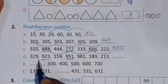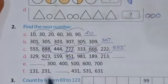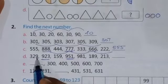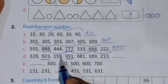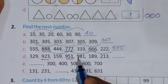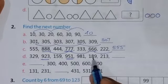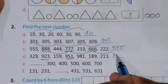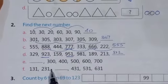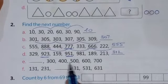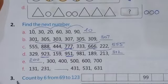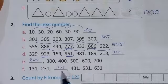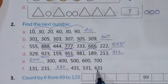In this question D, the numbers if you observe, 329 in that number is given reverse order: 159, 951, 981, 189, 213, so 312. In this question here 300, 400, 500, 600, 700 continue, it means before 300 there will be 200. 131, 231, 331, 431, 531, 631.